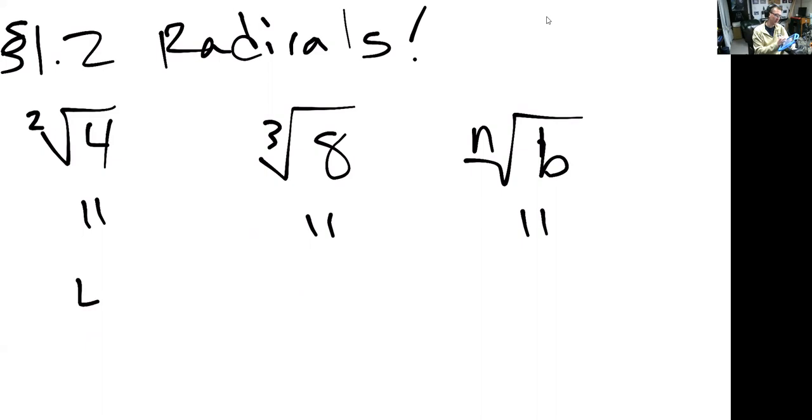This is four to the one half power. This is eight to the one third power. This last one, which is the general form, is b to the one over n. So now that you see this, I hope you never forget it because you should be able to translate back and forth.